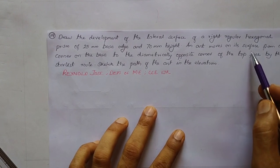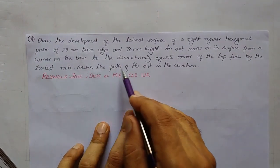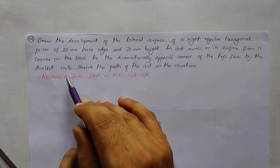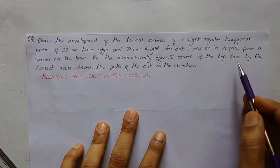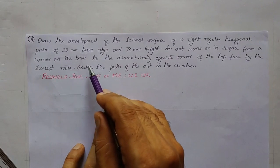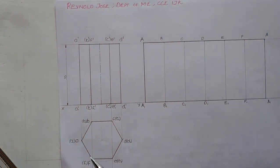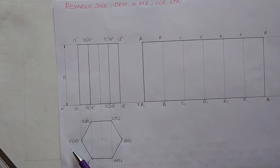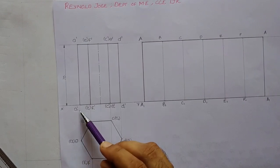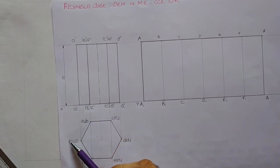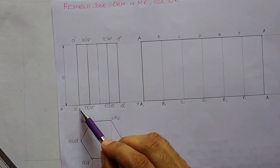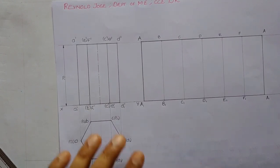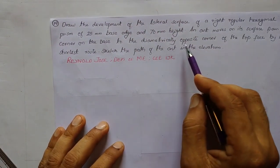The ant moves on the surface from a corner on the base to the diametrically opposite corner of the top face. We take the starting corner as A1 on the base. Along the base we have corners A1, B1, C1, D1, E1, and F1. A1 is identified in both the front view as A1-dash and in the top view as A1.